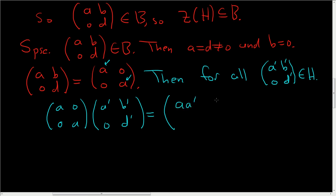So this is equal to (aa', ab'; 0, ad'). Again, just going through the multiplication quickly: 0, and looks like ad'. Let's go the other way.